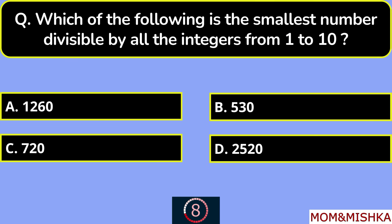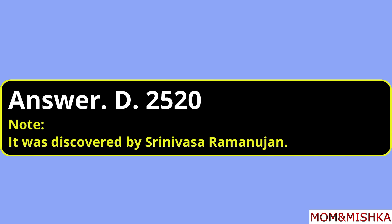Which of the following is the smallest number divisible by all integers from 1 to 10? The answer is 2520. Option D. This number was discovered by Srinivas Ramanujan.